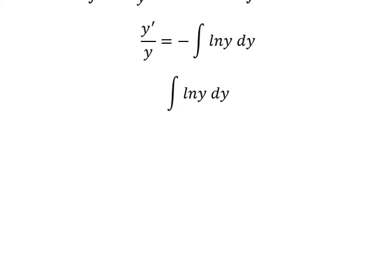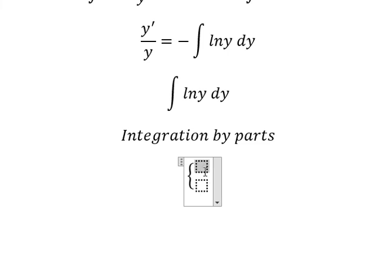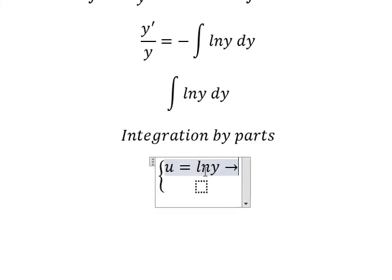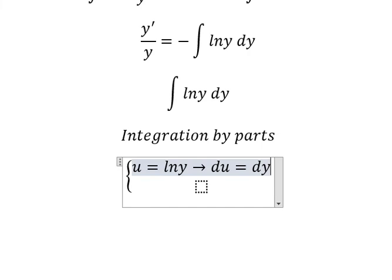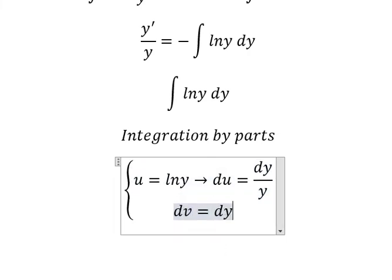We can use integration by parts. I will put u equals ln y, so we do first derivative for both sides and you got du equals dy over y. dv equals dy, so the integration of this one gives v equals y.